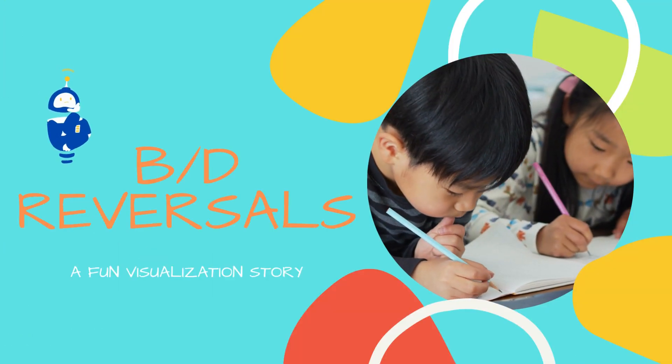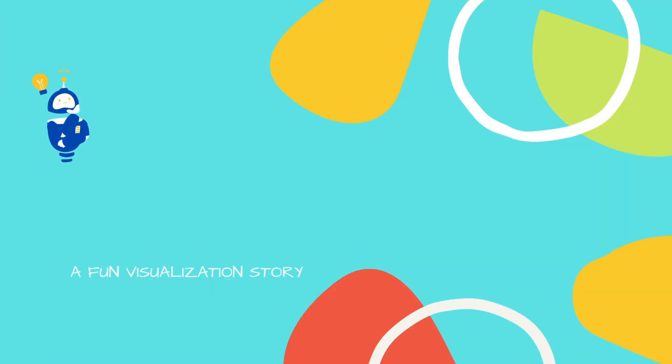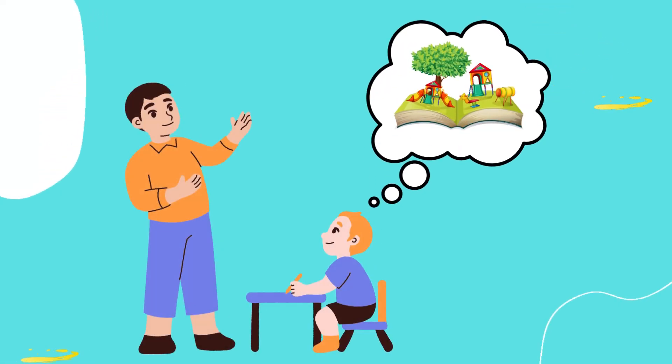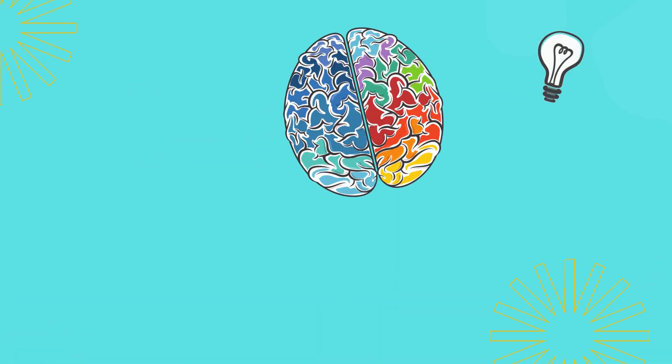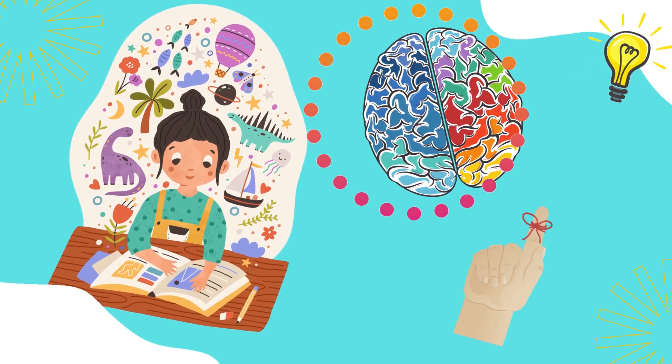The letters B and D often get confused in our brain when we are reading or spelling. Here is a fun story and visualization strategy that incorporates different parts of your brain to help you remember.